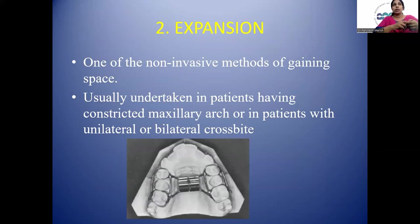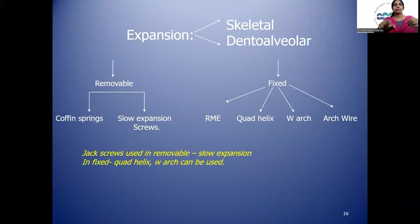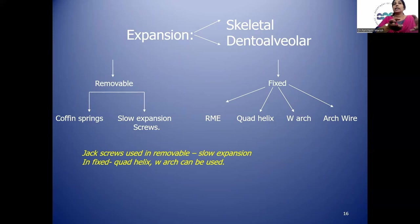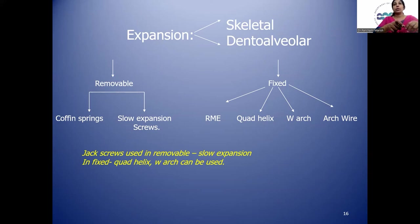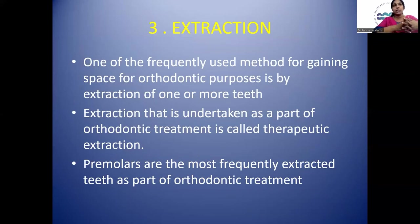Expansion is one of the most non-invasive methods of gaining space. It is usually undertaken in patients having a constricted maxillary arch or in patients with unilateral or bilateral crossbite. Expansion is of two types: slow and rapid. For slow expansion, removable appliances can be used incorporating coffin springs or screws. Skeletal expansion is done with fixed appliances such as RME, quadhelix, W-arch, and arch wires. Quad helix and W-arch can also be used in fixed appliances.